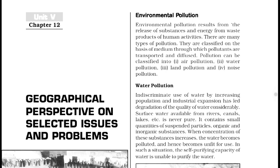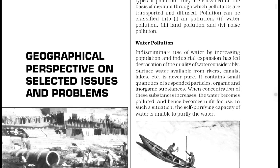Firstly, Environmental Pollution. Environmental pollution is something that results from the release of substances and energy from waste products of human activities. On the basis of the medium through which pollutants are transported and diffused, there are four types of pollution: one, water pollution; second, air pollution; third, noise pollution; and fourth, land pollution.